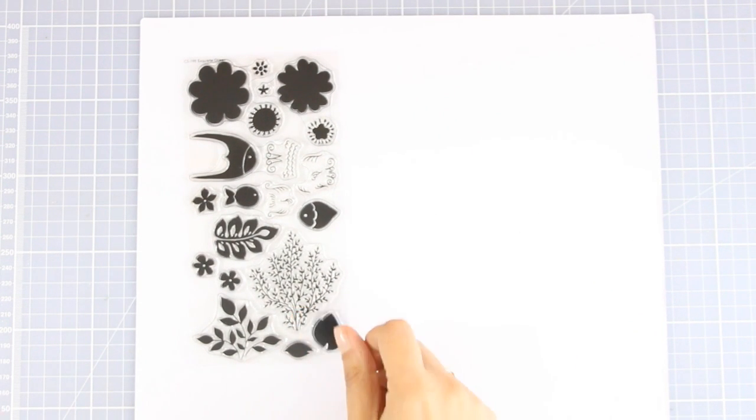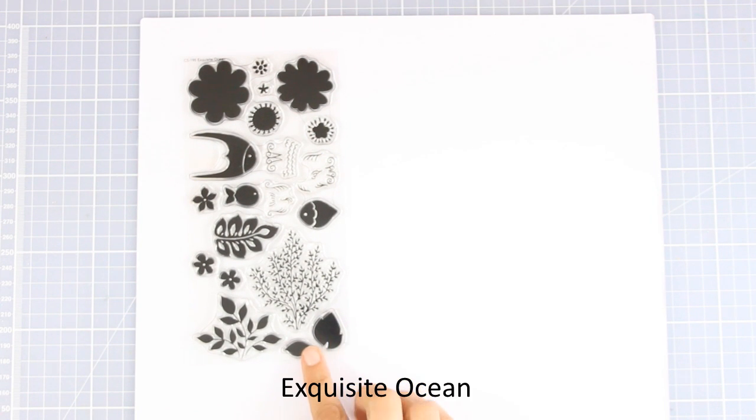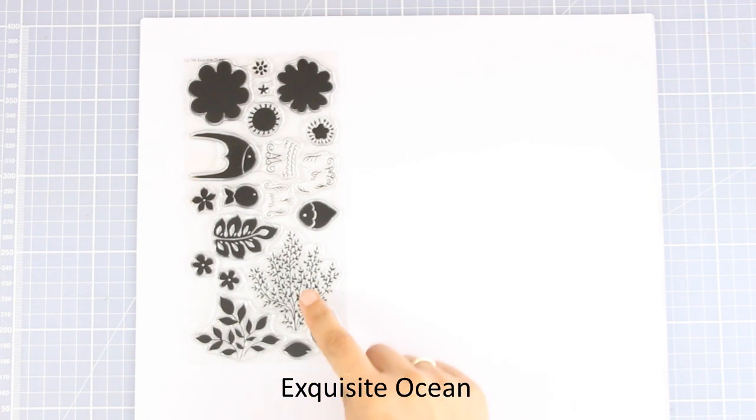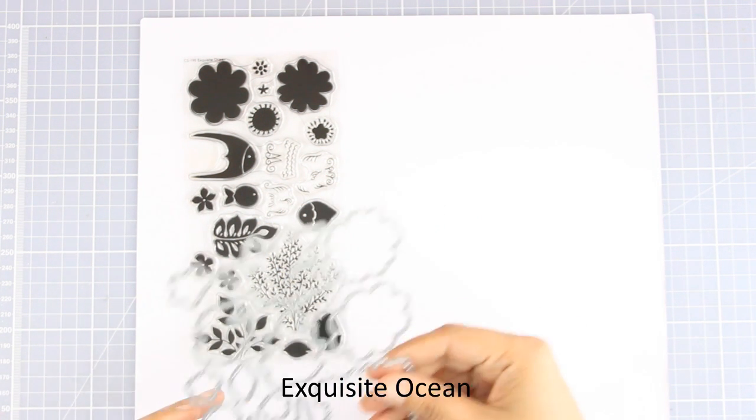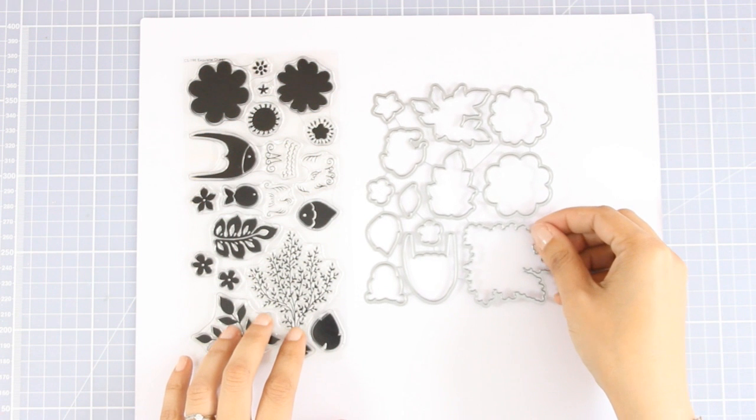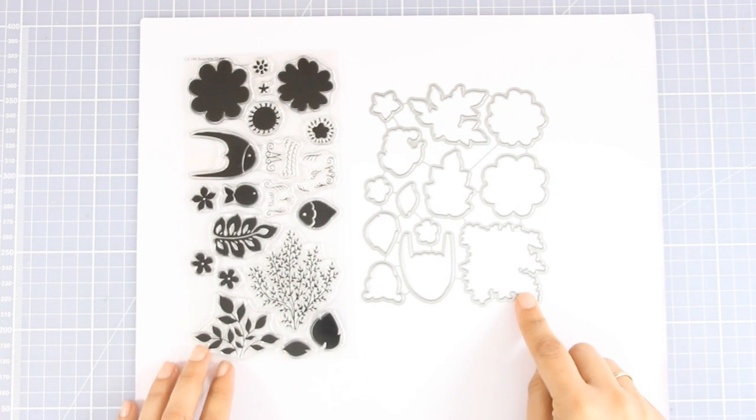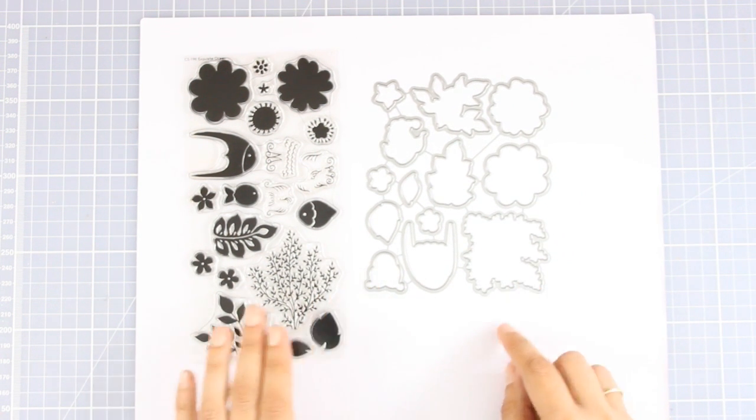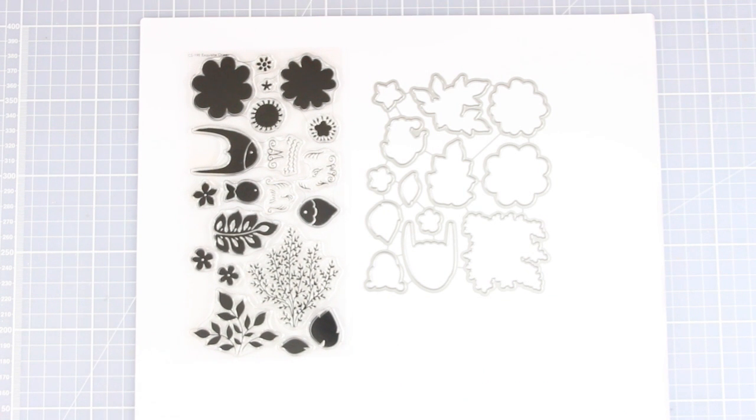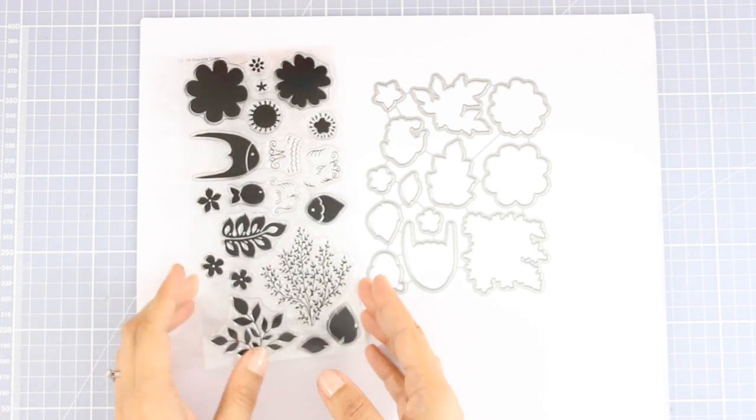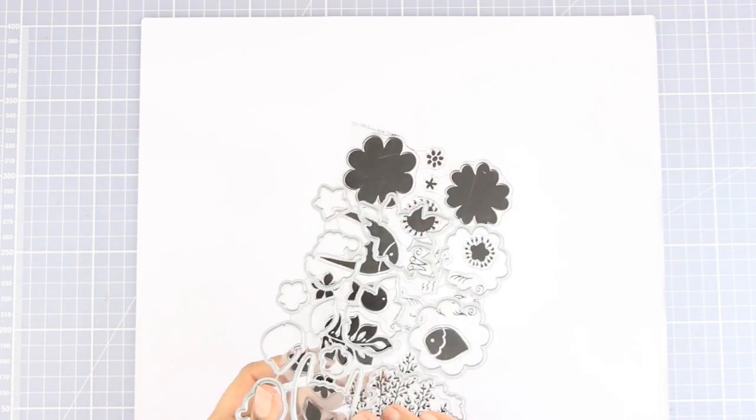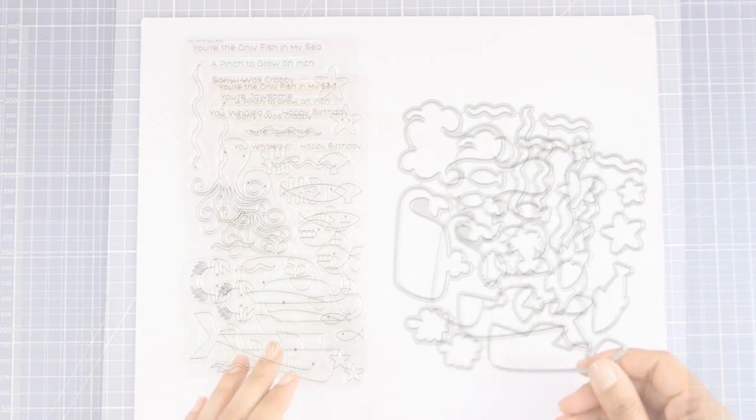First I'm going to go through all the large stamp sets. This is a 4x8 stamp set called Exquisite Ocean, and as you can see it gives you beautiful images to create your little underwater scene. This is a great stamp set to go with the rest of the stamp sets that I'm going to show you.